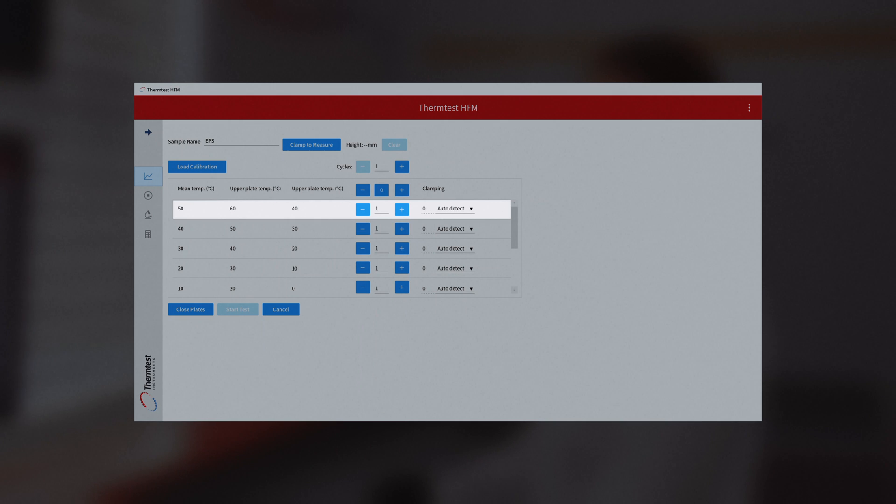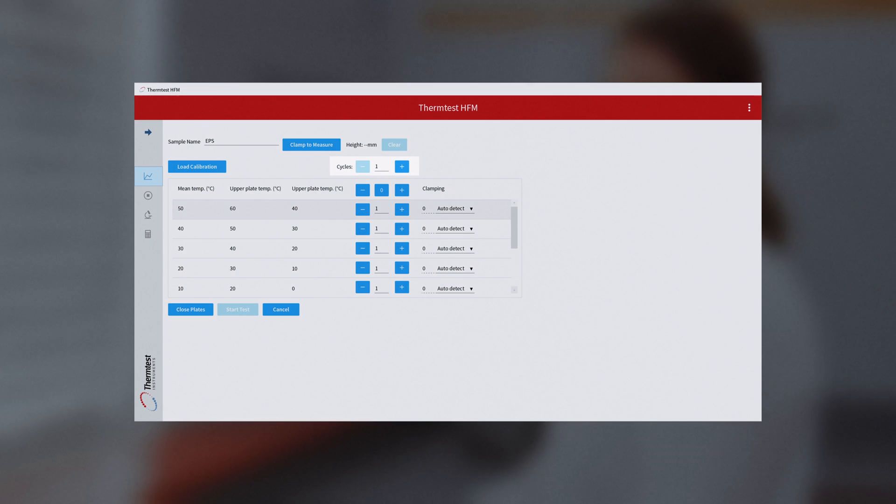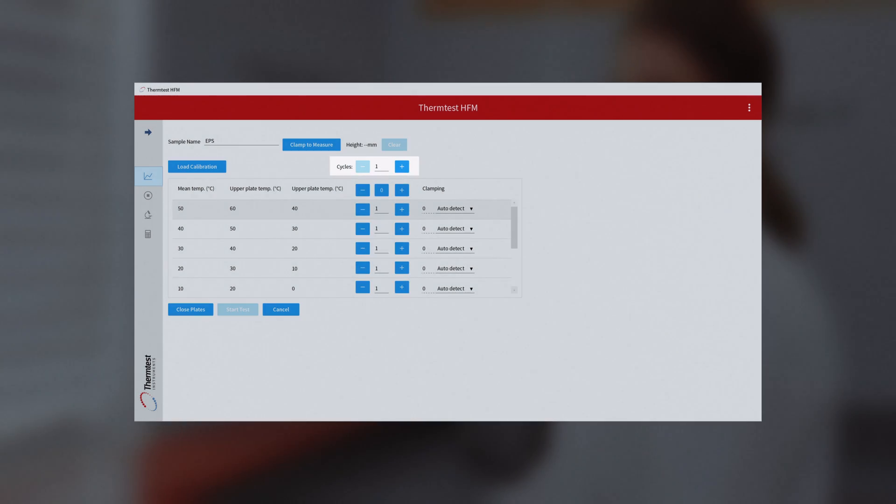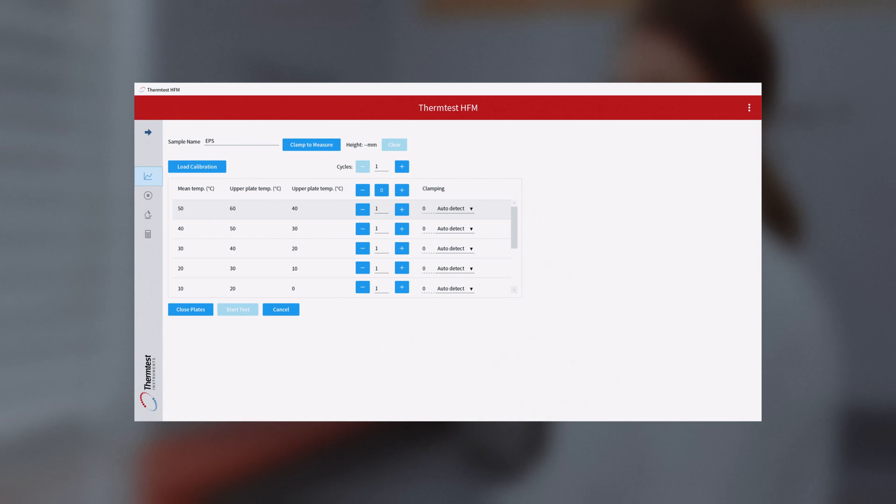After calibration, several testing schedule options can be used to repeat testing at the same temperature. The cycle feature allows the user to run the same schedule more than once. These powerful tools can be used to study the application life of materials.